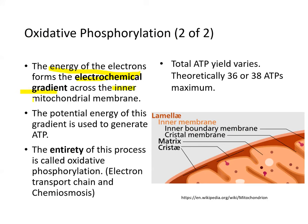The energy of the electrons forms what we call an electrochemical gradient across the inner mitochondrial membrane, and the potential energy stored in this gradient is what generates ATP. This entire process is called oxidative phosphorylation, which includes electron transport chain as well as chemiosmosis. Total ATP yield varies — theoretically 36 to 38 ATPs are possible.